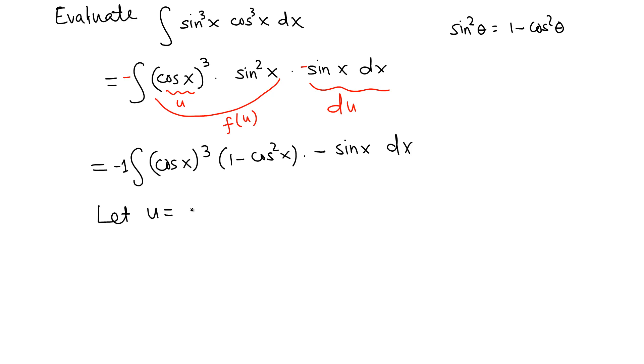Now we let u be cosine x, so we are making this substitution. Then find the derivatives of both sides with respect to x, so du over dx. I want to write in differential form. Du over dx, so I move dx to the right side, and derivative of both sides is negative sine x.